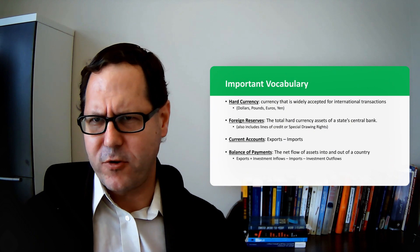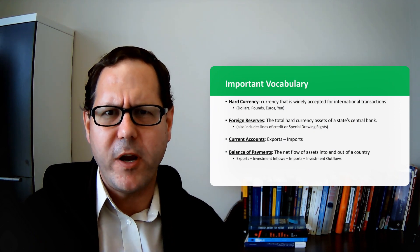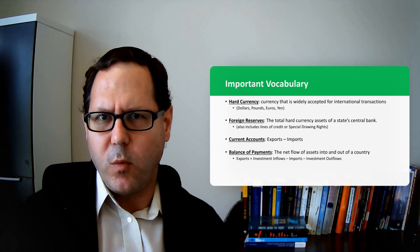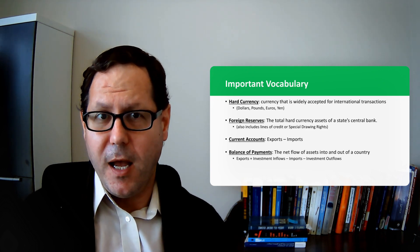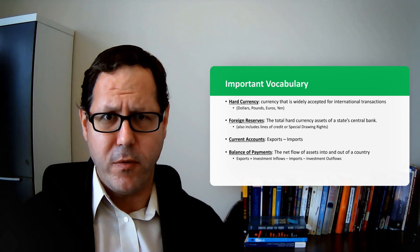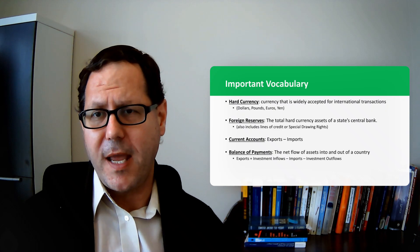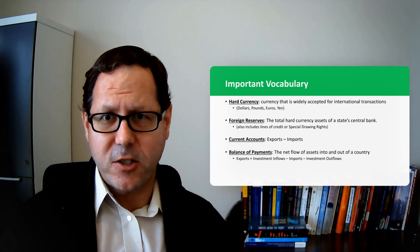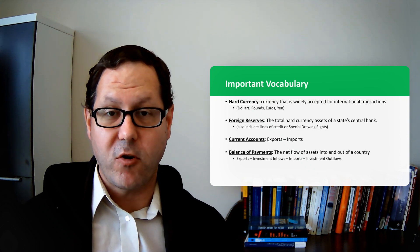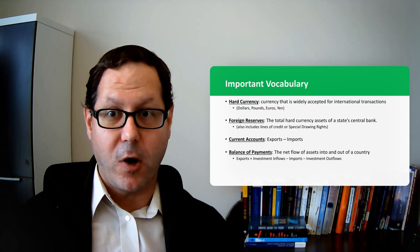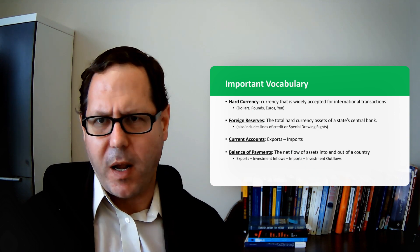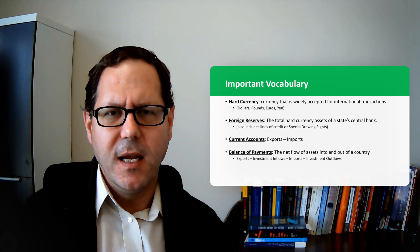To get there, I want to first lay some core vocabulary. One of the terms we'll be talking about is hard currency, which is essentially currency that's widely accepted in international transactions. The dollar, the pound, the euro, the yen — these are currencies attached to large economies that produce a lot of stuff people want to buy. So there's demand for that currency, and they have open capital markets where investors can buy and sell stocks, bonds, and real estate as they want.